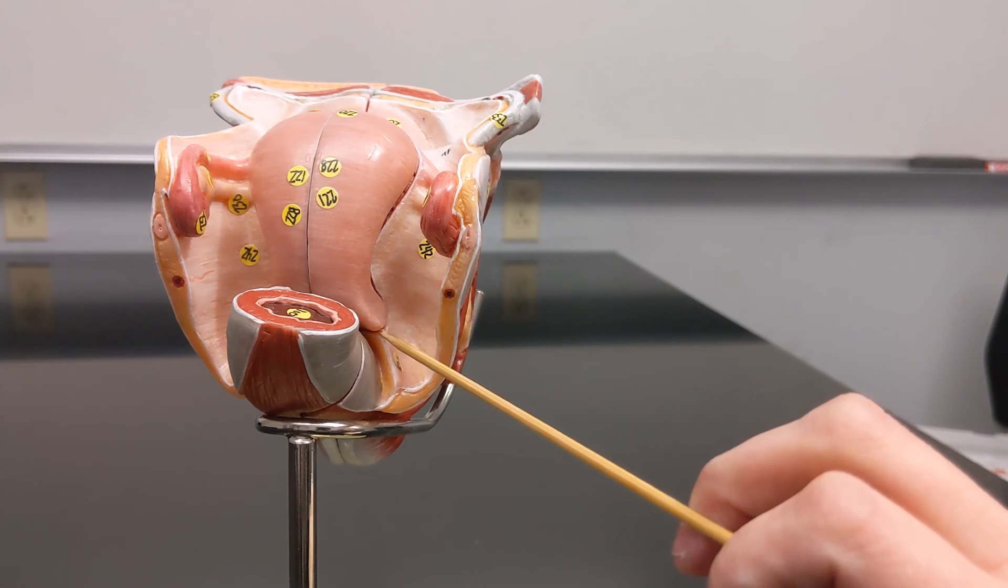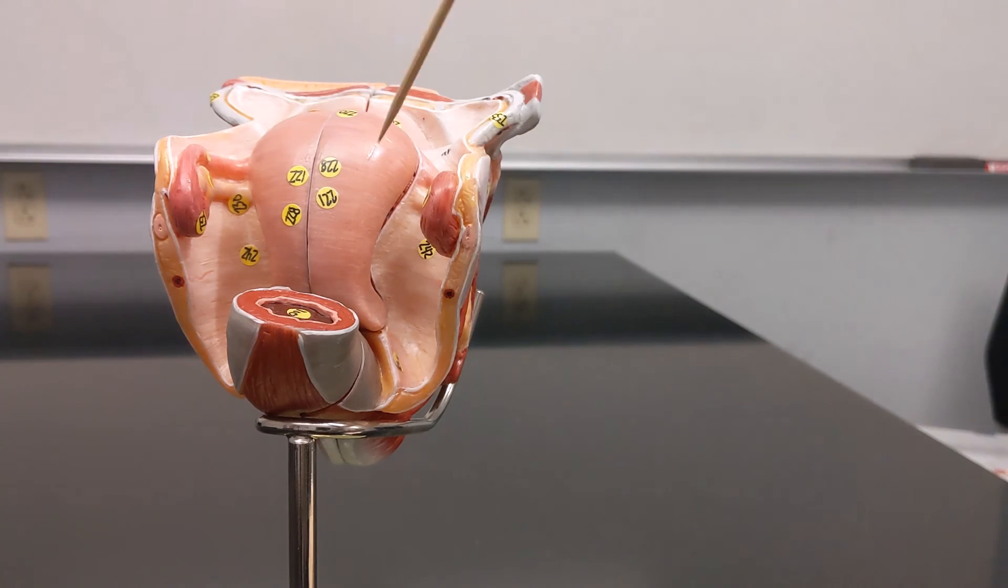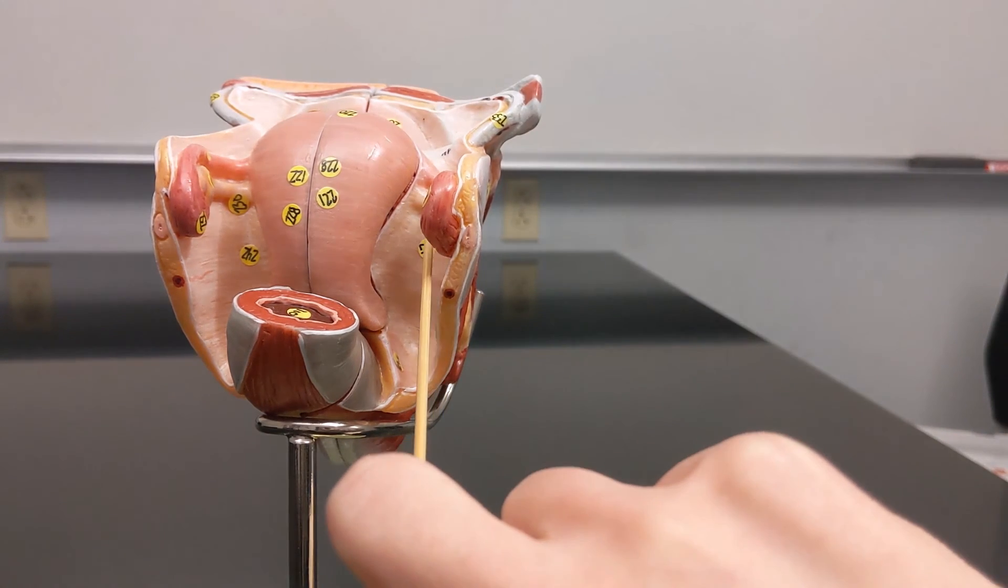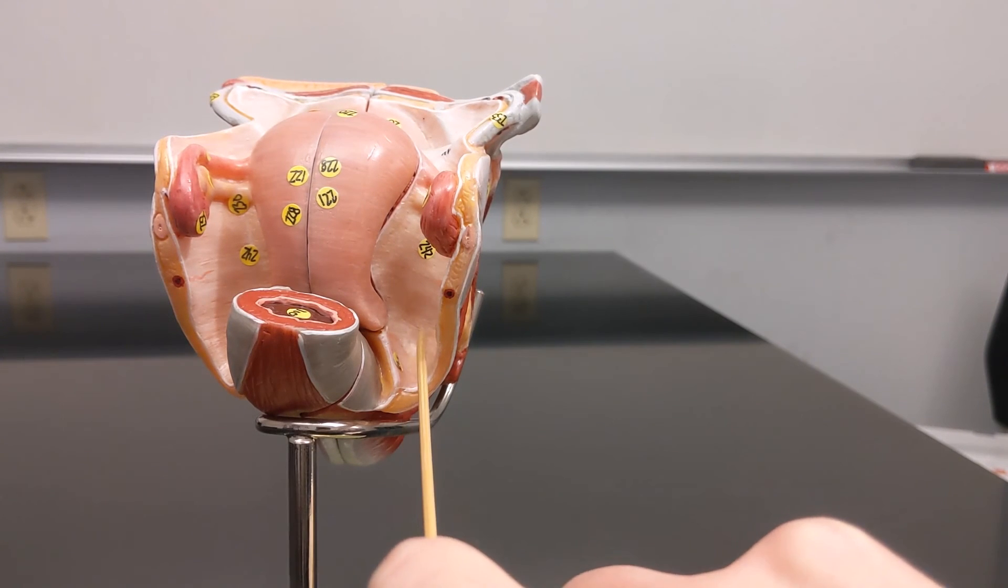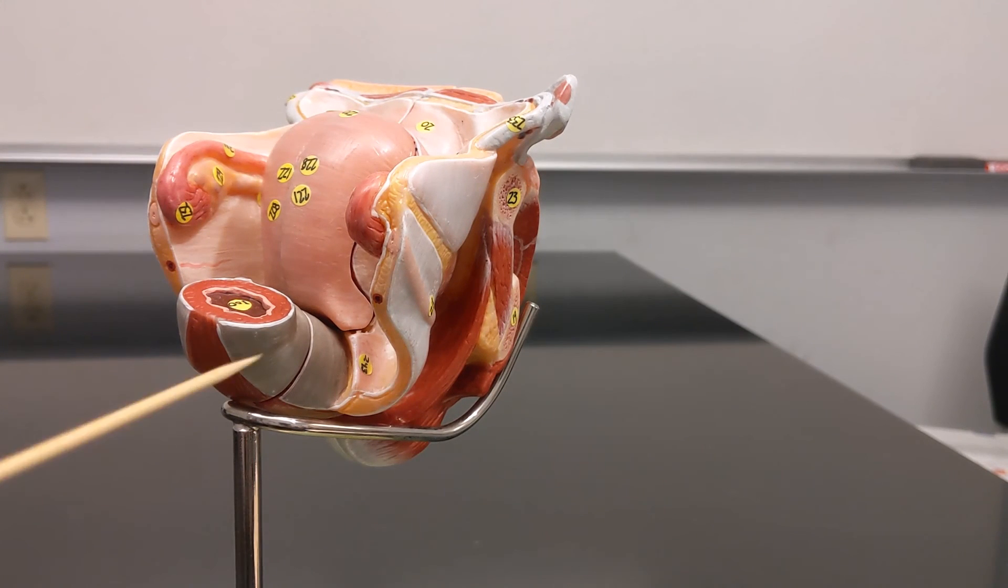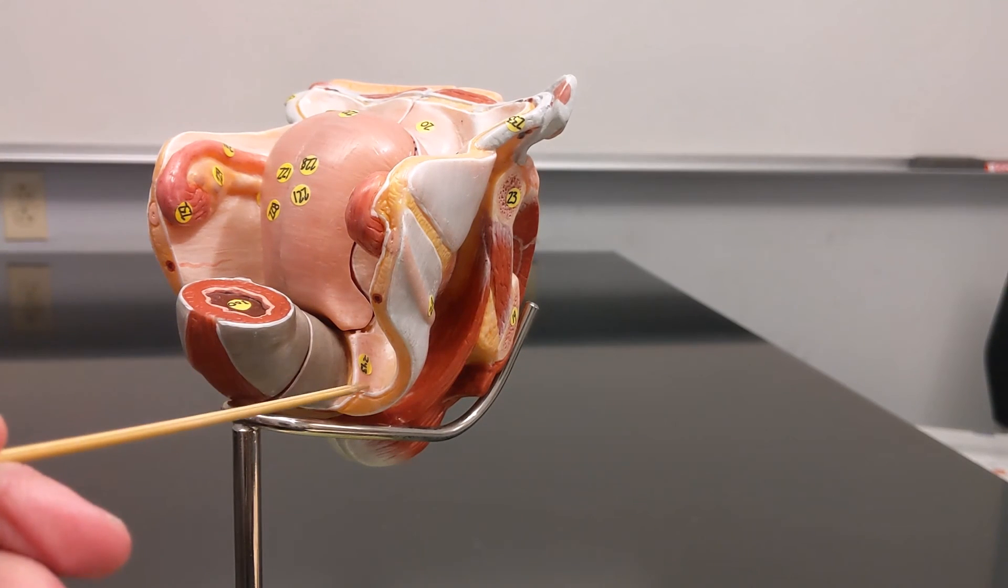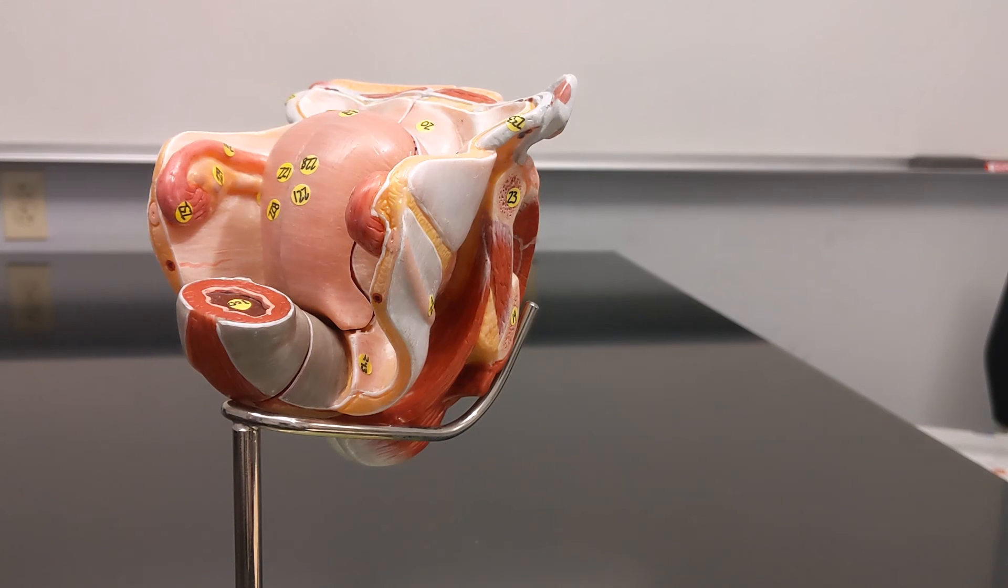The uterus has multiple ligaments that support it. We can see three here. There's this one, this one, this one, and that. So in the front you find the round ligament. The wide one is the broad ligament and then in the back is the sacro-uterine ligament because it is going from the sacrum to the uterus.